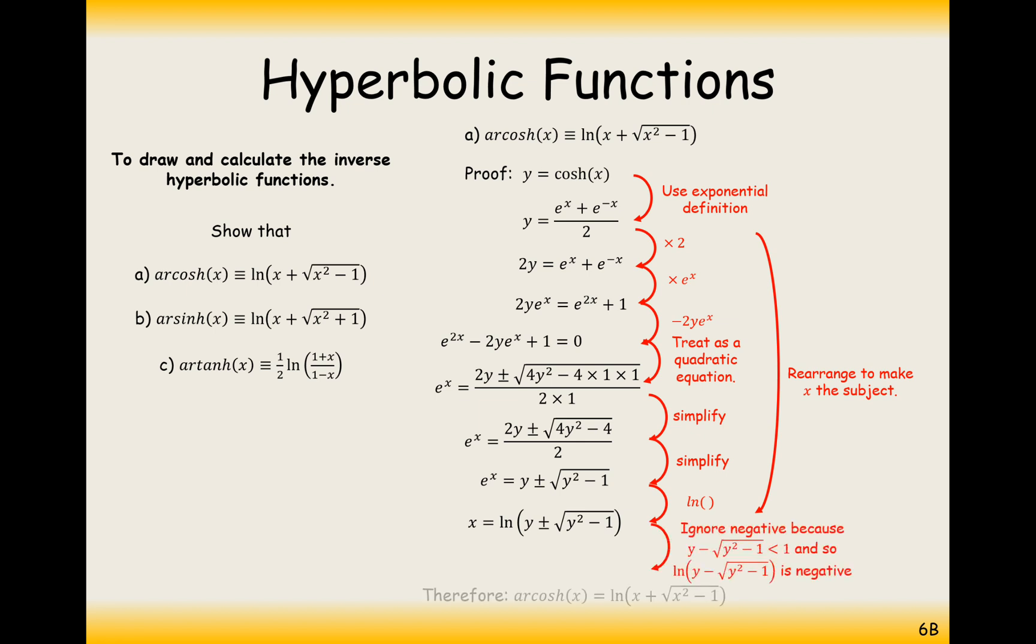Now, actually, what we're going to do is we're only going to take forward the plus in this plus minus. And the reason is because when you do y minus the square root of y squared minus 1, you're going to get an answer there that's less than 1. And what we don't want is to have an answer less than 1, because when you log an answer less than 1, you're going to get something that's negative. And we don't want x to be negative because there are no negative x values in the inverse cosh graph. So we only want the positive one, so that's the only one we're going to take forward. So there we are. That's the answer to part A.